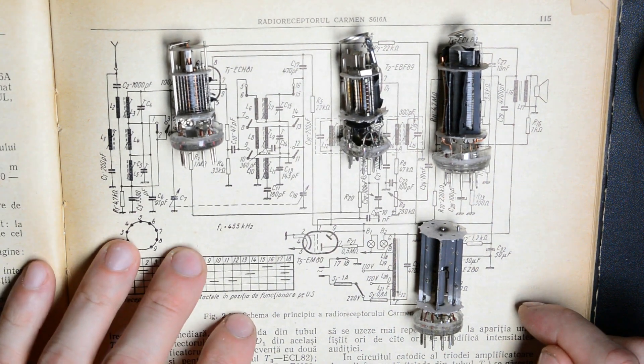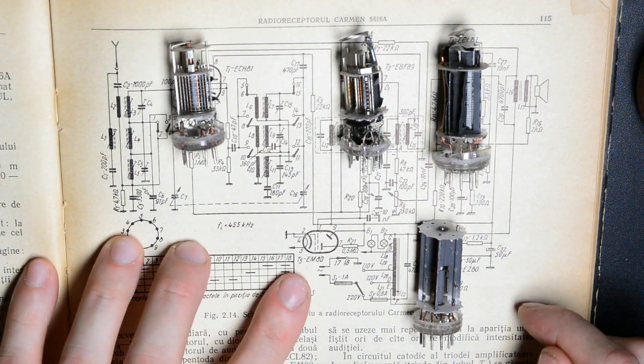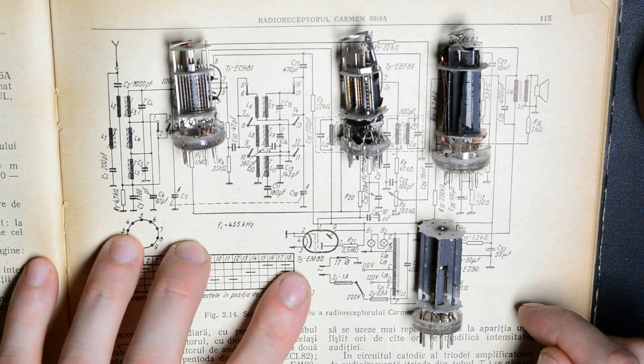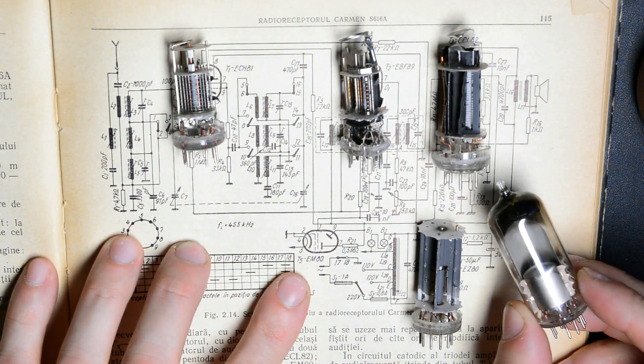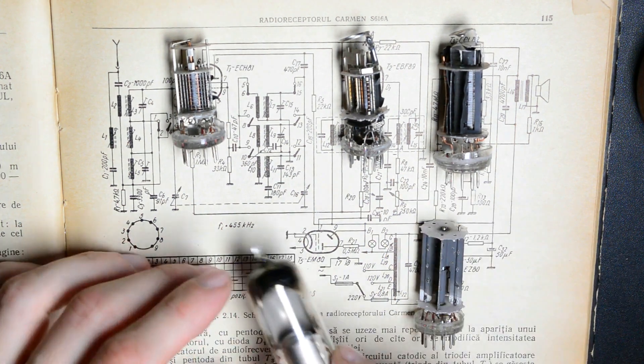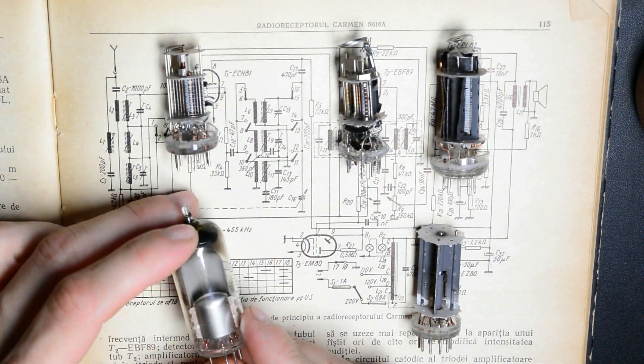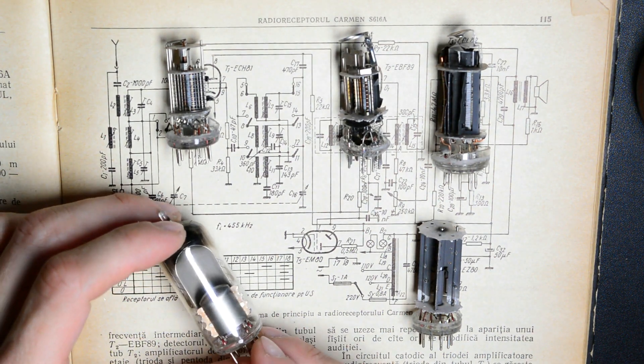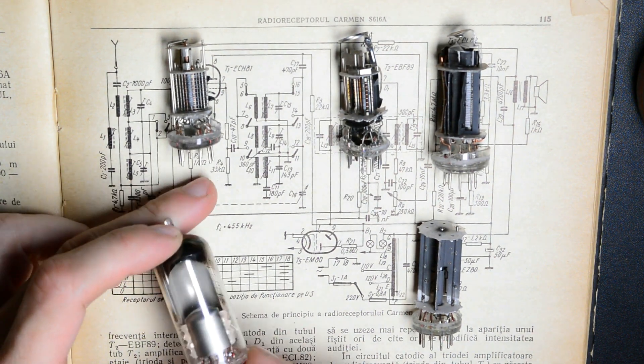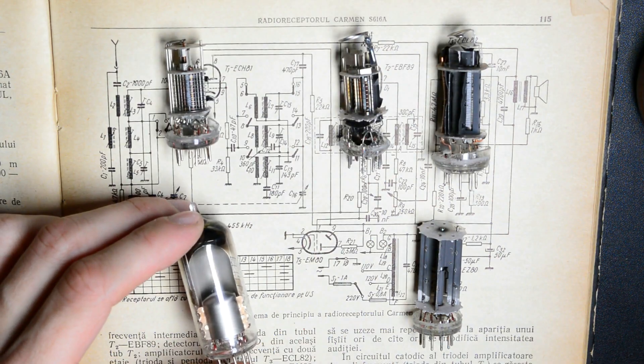The last thing to do is look at this tube. The magic eye, or with its less fancy name, the tuning indicator. In this case, an EM-80 vacuum tube. If you're curious to see how this tube works, what's its purpose, how this sort of tube evolved over time, and in particular how this one is built, then keep watching.